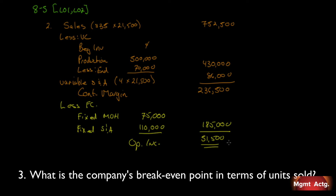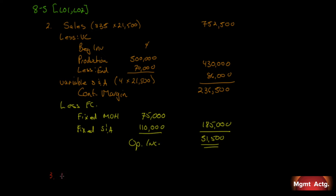Number three: compute the company's break-even point in units sold. The break-even formula is fixed costs divided by contribution margin per unit. Our total fixed costs are $185,000. To find contribution margin per unit, we divide total contribution margin $236,500 by units sold 21,500.